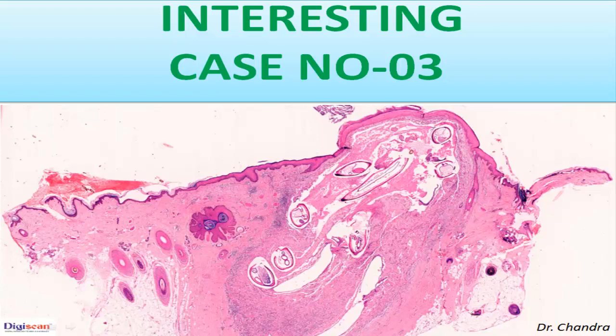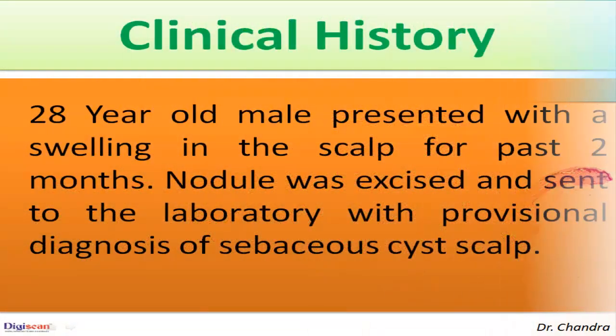Today, I am going to present another interesting case number 3. As with other cases, this case has also been taken from the files of DigiScan histopathology set. The clinical history: a 28-year-old male presented with swelling in the scalp for the past 2 months. The nodule was excised and sent to the laboratory with a provisional diagnosis of sebaceous cyst of scalp.